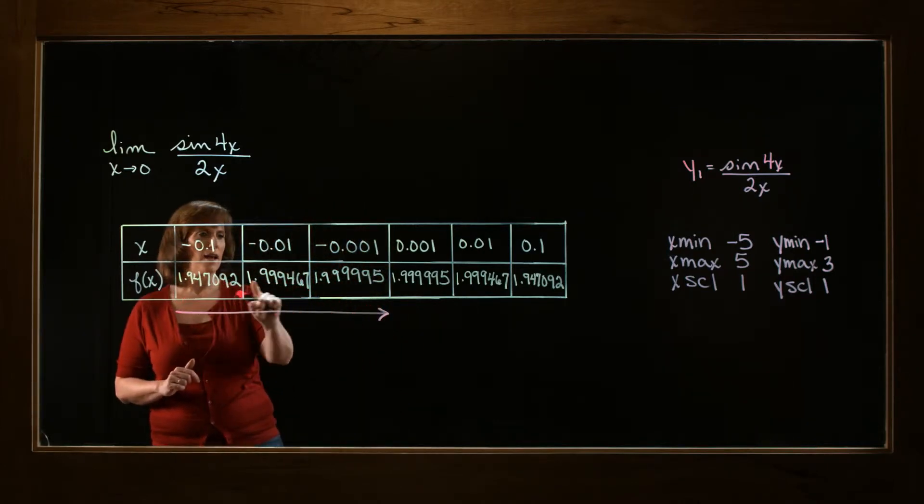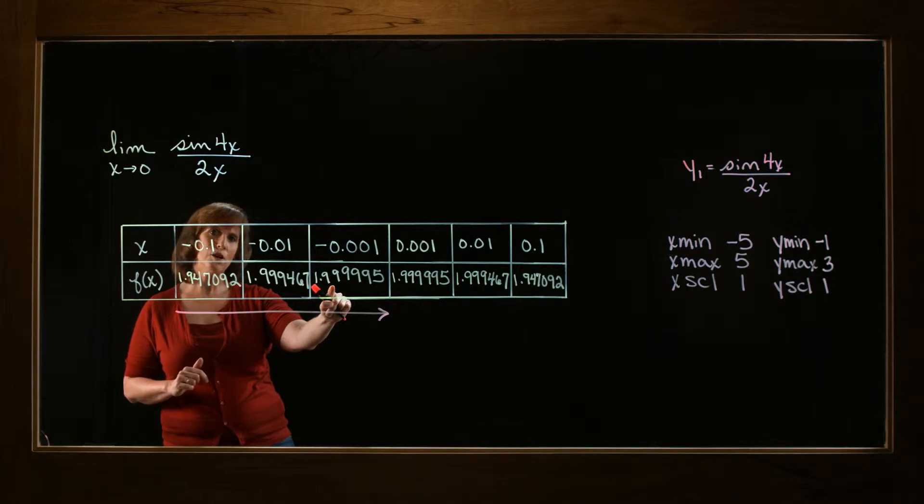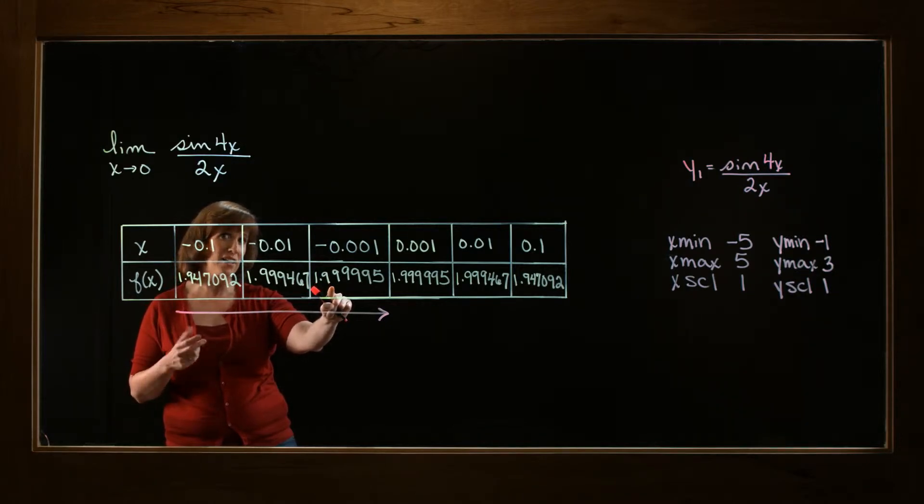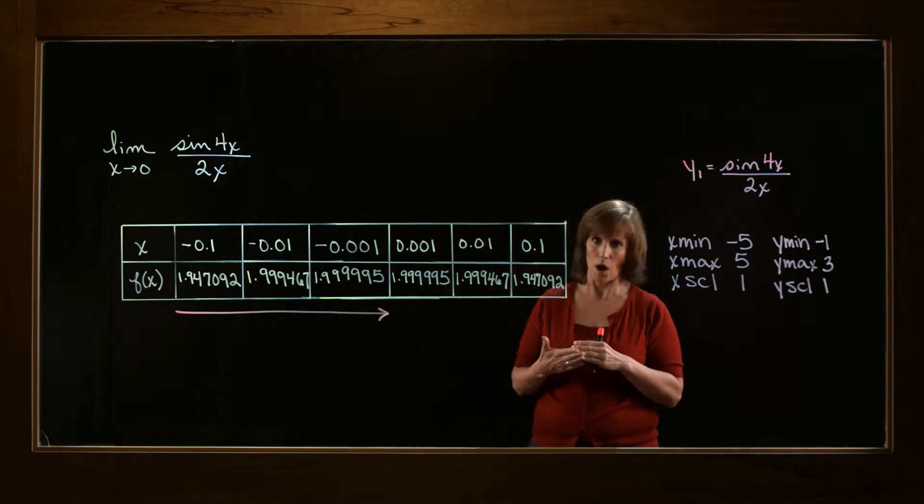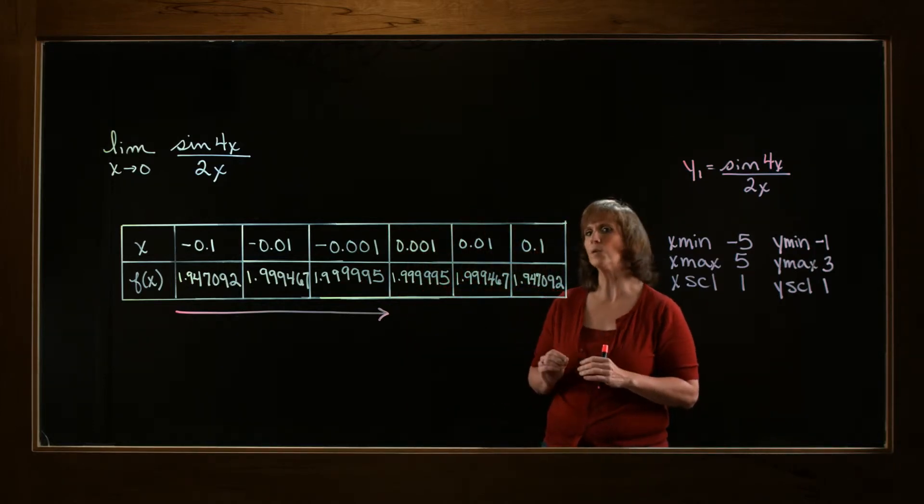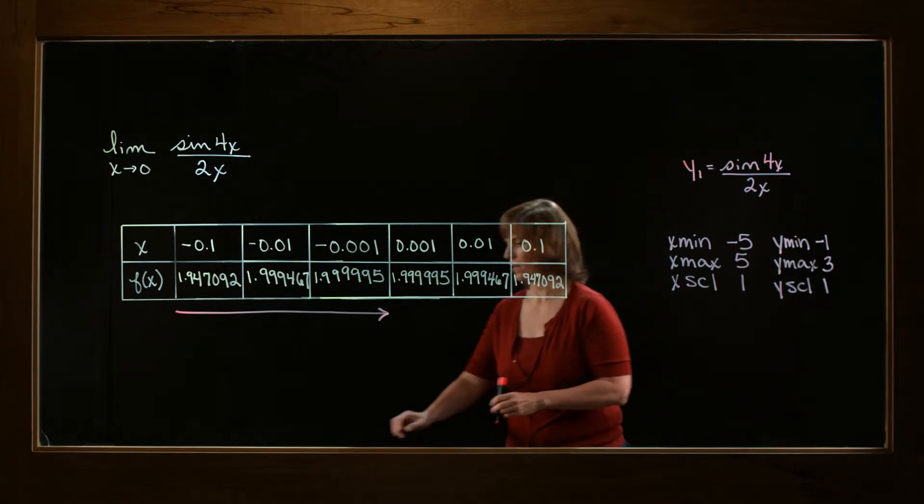Well, look at these numbers. They're getting closer and closer to what looks like 2. Have I guaranteed that it's actually going to 2? No, I don't have that guarantee. But that's what it looks like for my table.